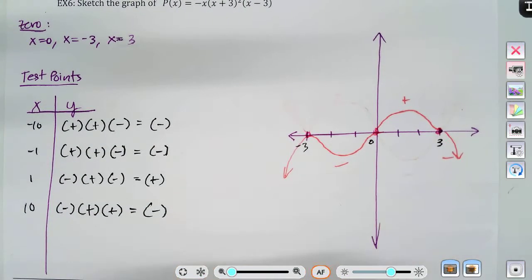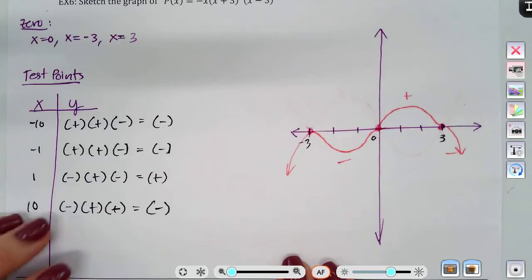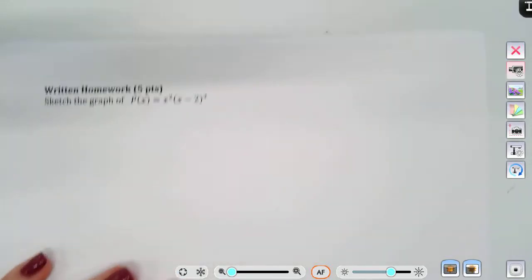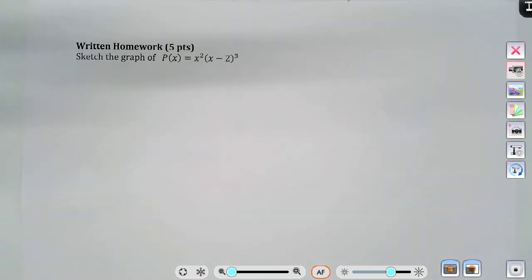And this is a rough idea of what our graph looks like. Just a sketch. Please remember, your arrowheads on either side. That is it for 3.2. Here's your written homework. Five points. Do it at the end of the week. Please email me if you have any questions.